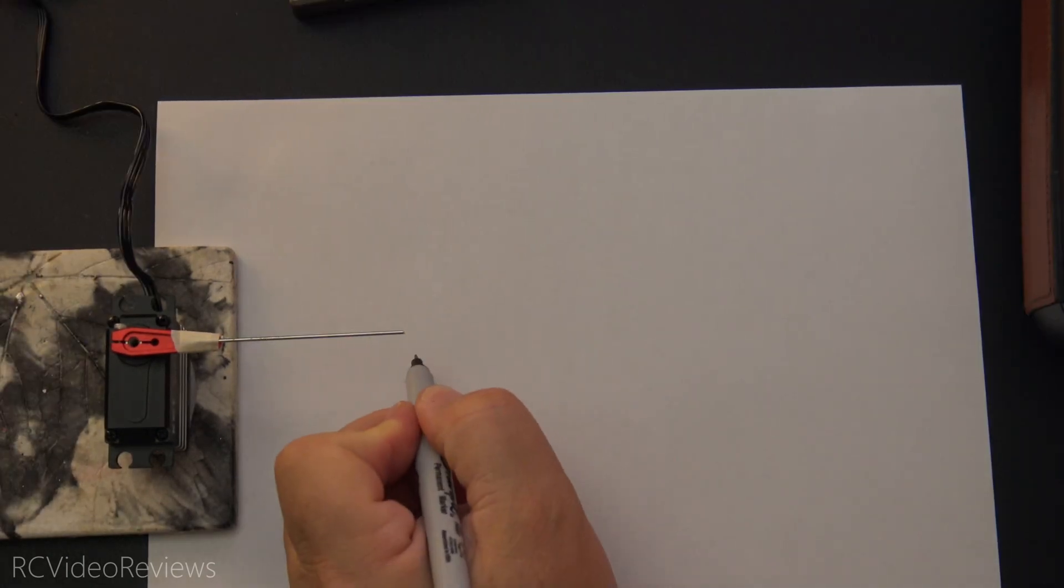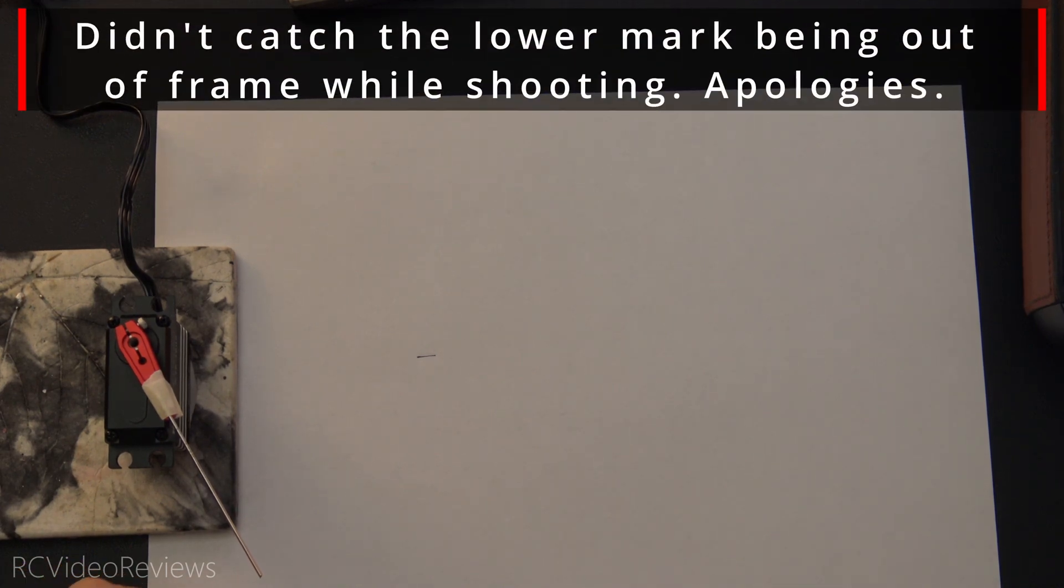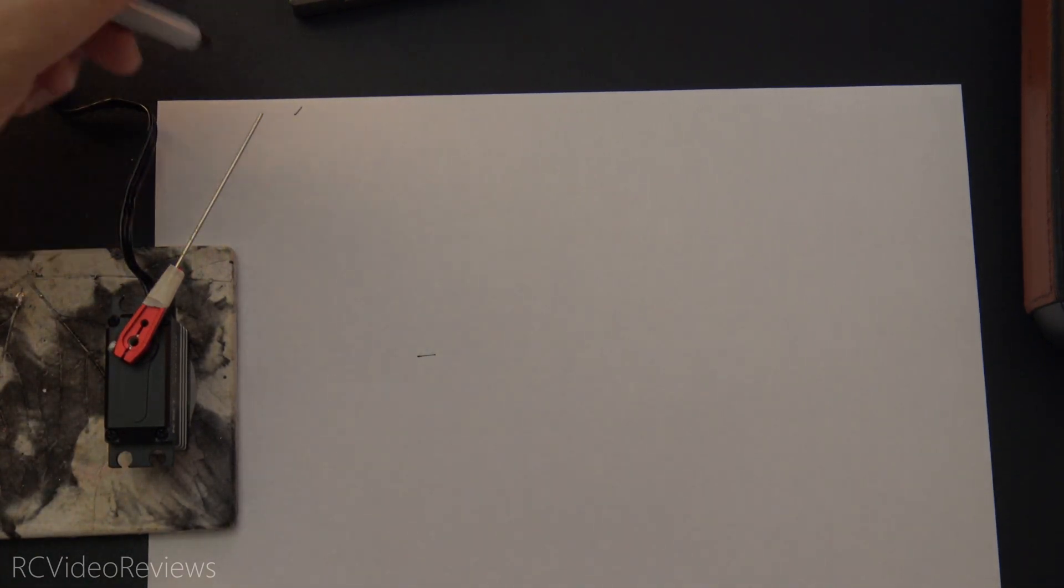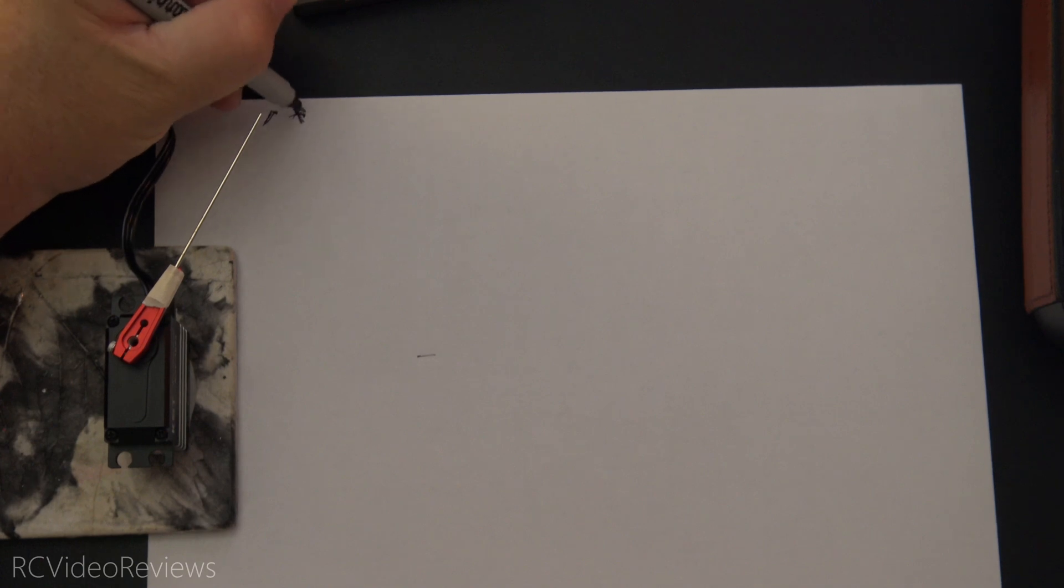Okay. The first measurement on the sheet will be for center, and I'm going to mark that right here. Then I'm going to go to full deflection down, and we'll mark that one right here. And we'll go to full deflection up, and we'll mark that right about there.